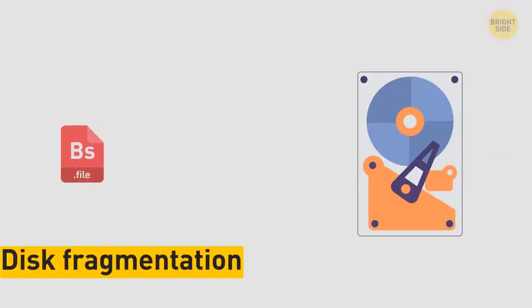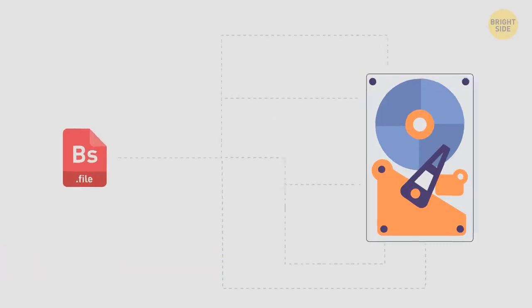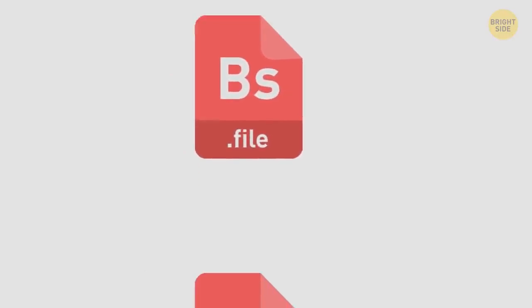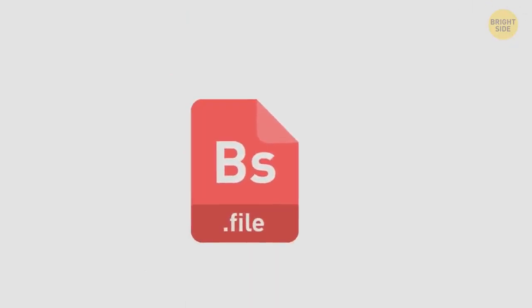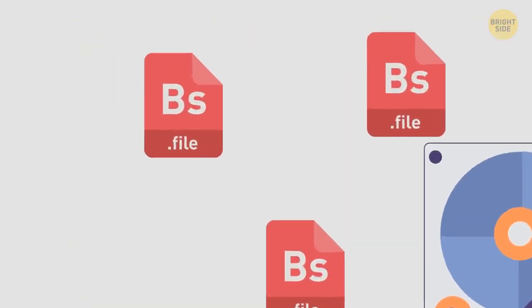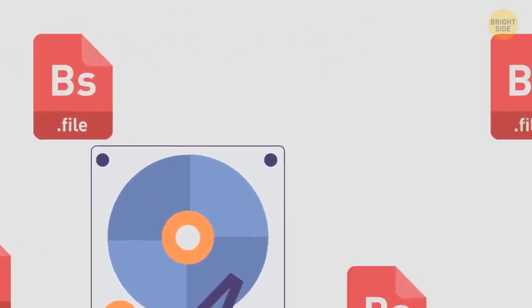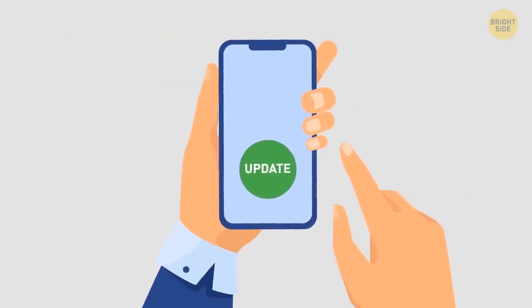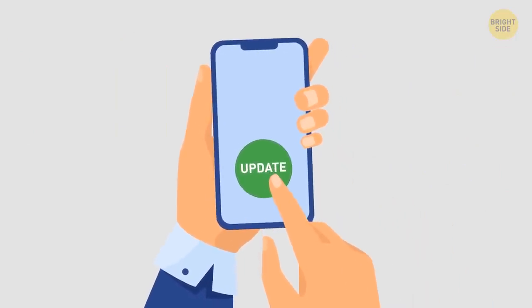Disk fragmentation happens when a file is broken into different pieces to fit on the disk. Since many files are always being written, deleted, or resized, it's only normal for it to happen. And it gets worse when a file is distributed in different locations. People end up thinking the OS needs an update or some viruses ended up on their disk.